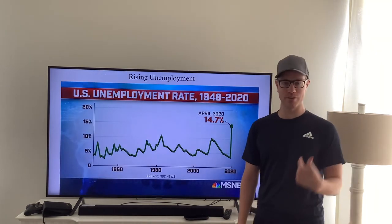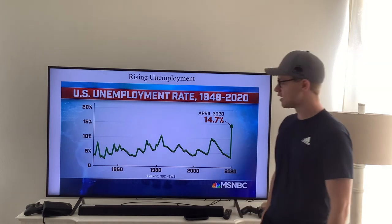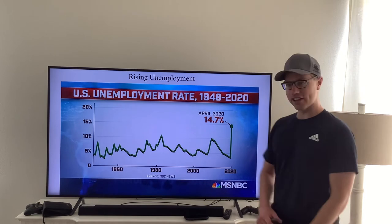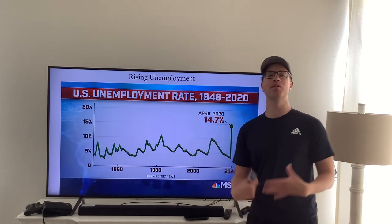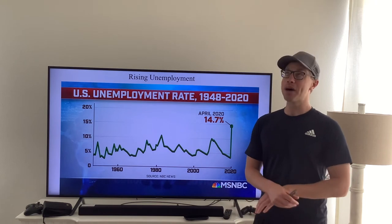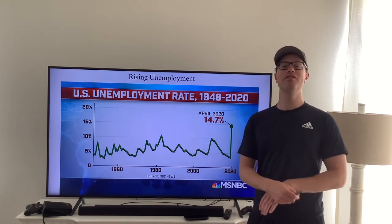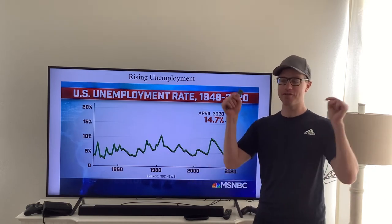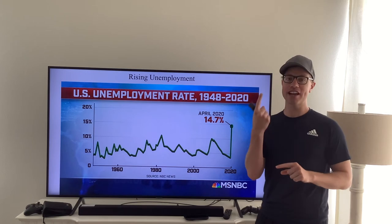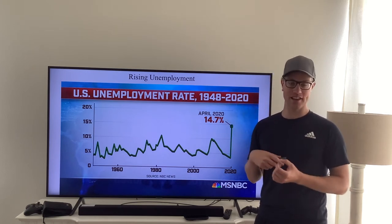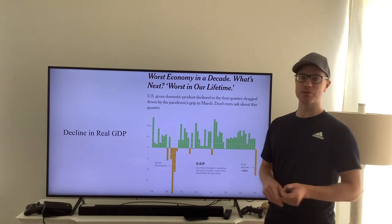Number one: rising unemployment. If you take a look at unemployment since about 1950 in the United States, you'll see that the United States is actually at the highest unemployment we've seen in about 90 years right now. Since the Great Depression, we've never had unemployment like we have right now. That unemployment continues to go up, so we could maybe pass that Great Depression mark. You also need a decline in real GDP.